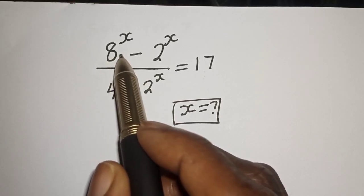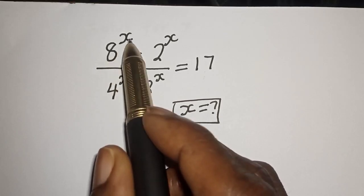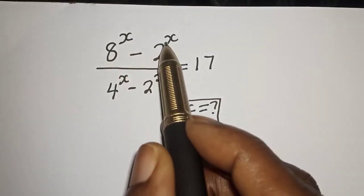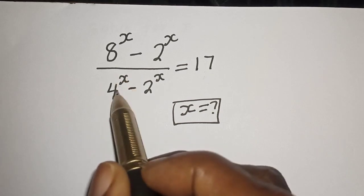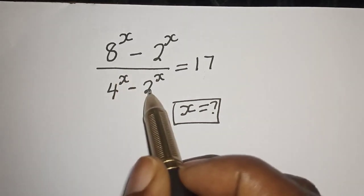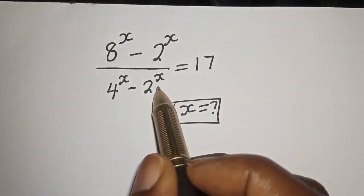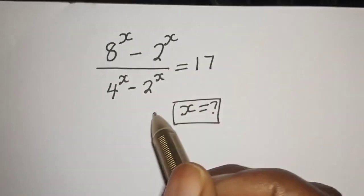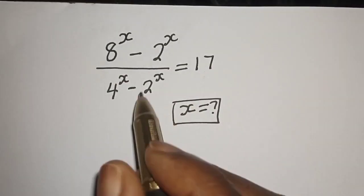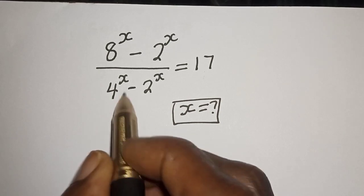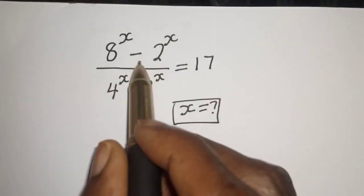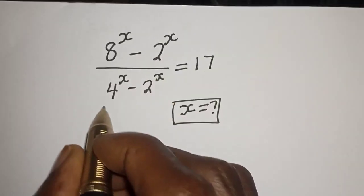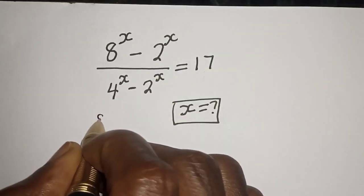How to solve 8 raised to power s minus 2 raised to power s, over 4 raised to power s minus 2 raised to power s, is equal to 17. We want to find the value of s from this equation.